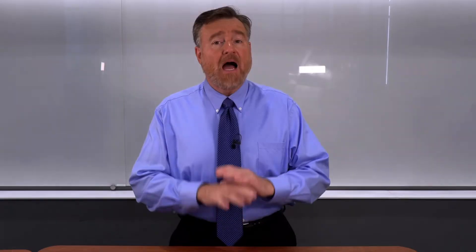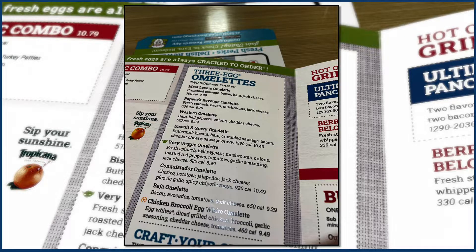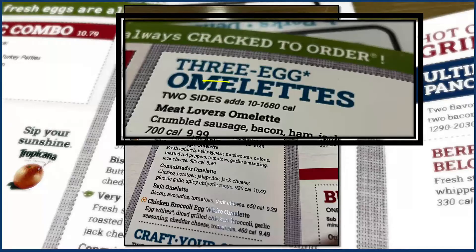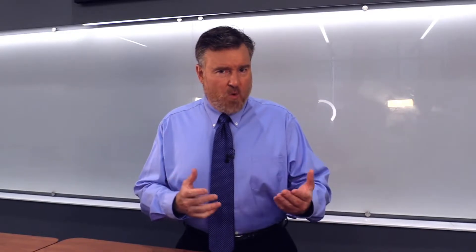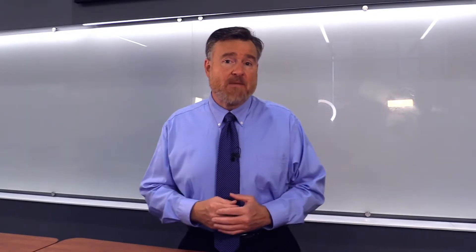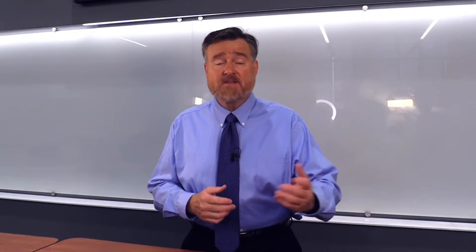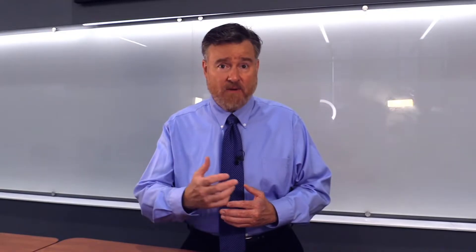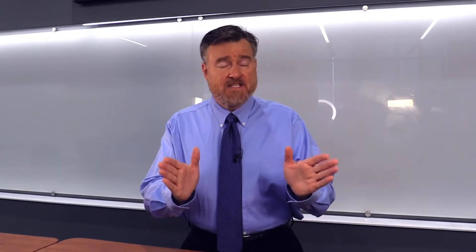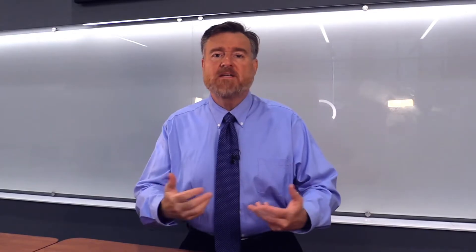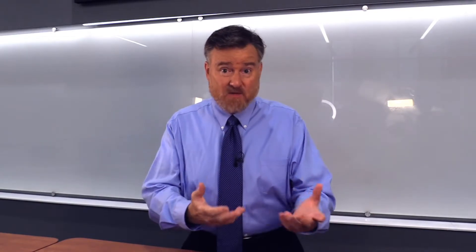I went out to breakfast one morning and found on the menu for three-egg omelets that I could order two sides, but those sides added between 10 and 1,680 calories to the meal. That's a lot of variability for two sides. I could use my measure of central tendency to say that vegetables tend to have lower levels of calories and fried foods tend to have higher levels. But when measuring all of the sides together, there's so much variability that it's really difficult to know what side contains what number of calories.